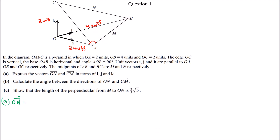The base is a right-angle triangle. So angle ONB is 90 degrees. OA is 2 units and OB is 4 units. Using Pythagoras' theorem, NB equals positive square root of 4² + 2², which equals square root of 12 units.